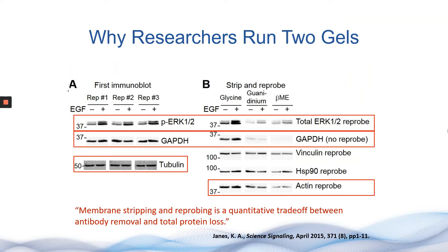Labs using housekeeping proteins for normalization usually rely on one of three different workflows. The first is the use of stripping and reprobing. In a strip and reprobe protocol, researchers first probe for their protein of interest, then strip that antibody complex off the membrane and follow it up with a second round of antibody probing for the housekeeping protein. There is a lot of data suggesting that membrane stripping and reprobing is a quantitative tradeoff between antibody removal and total protein loss, as strip protocols actually remove protein of interest in addition to the target antibody complex. This puts researchers in a challenging situation, as they don't know how much protein of interest is actually removed from the membrane.